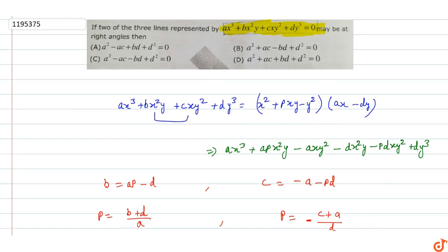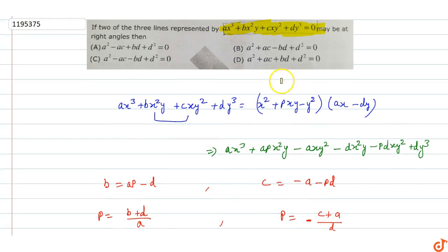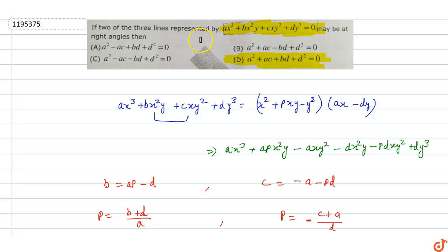So the answer is: A² + BD + AC + D² = 0, which can be written as A² + AC + BD + D² = 0. This means Option D is the correct answer. If two of the three lines represented by this equation are at right angles, then A² + AC + BD + D² = 0.